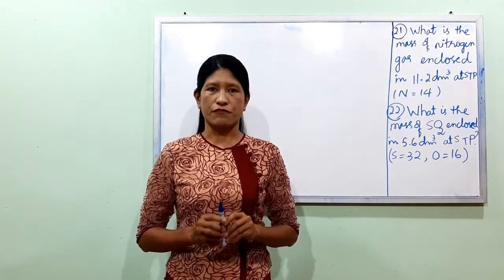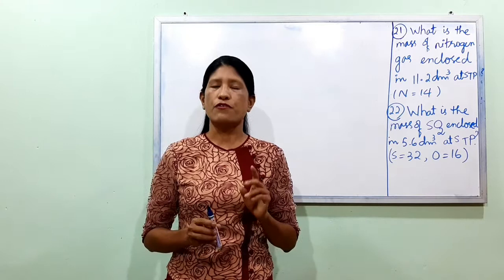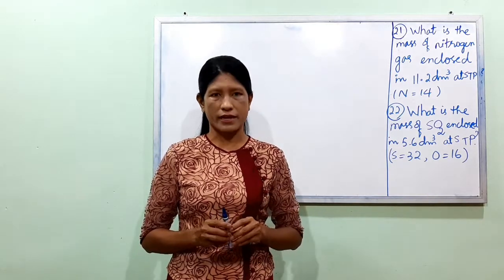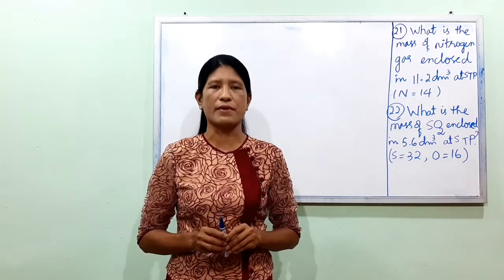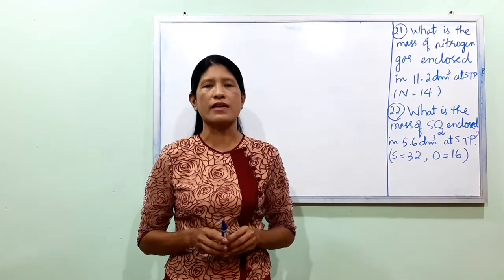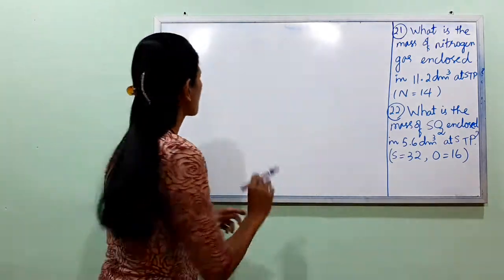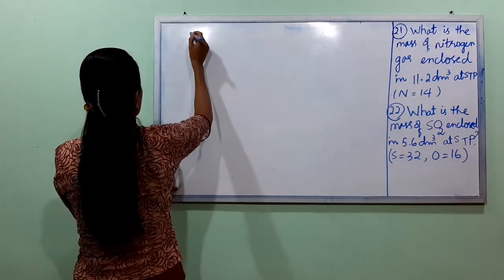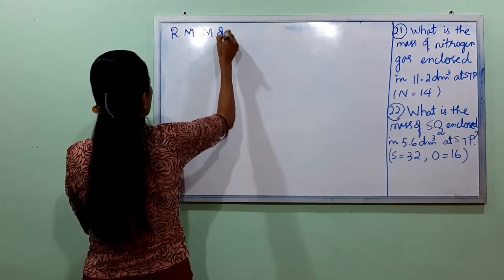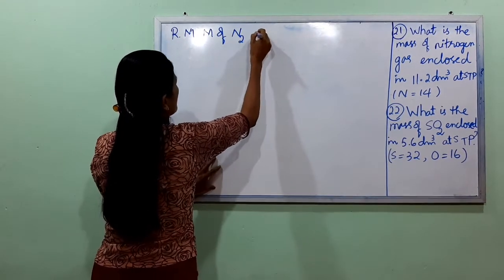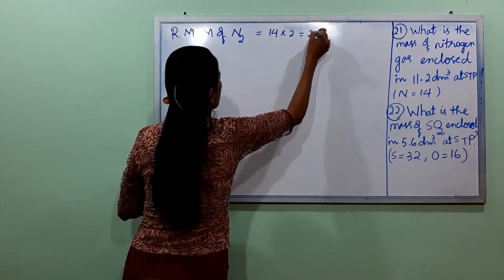At STP, the molar volume is 22.4 dm³. One mole of any gas occupies 22.4 dm³ at STP.